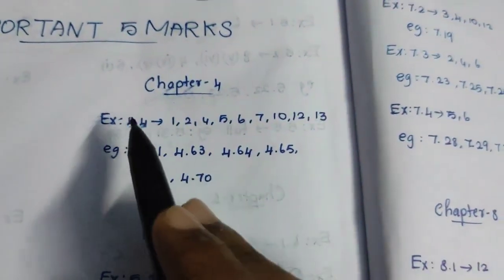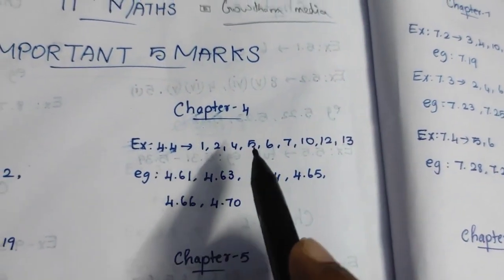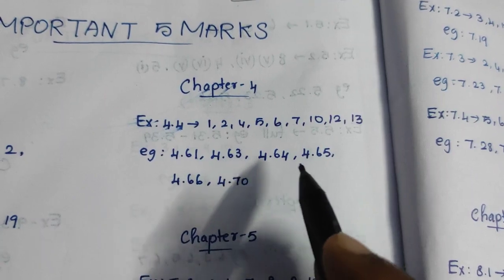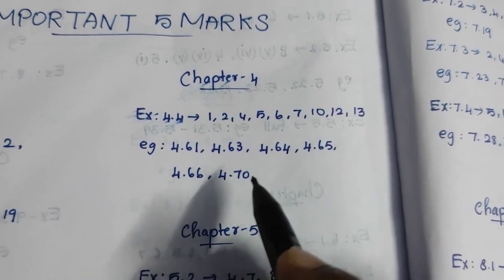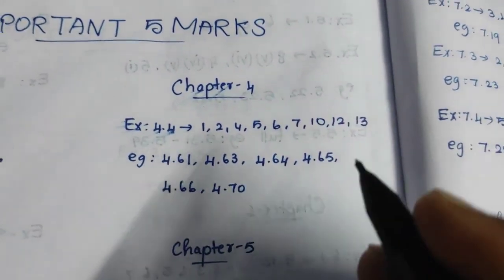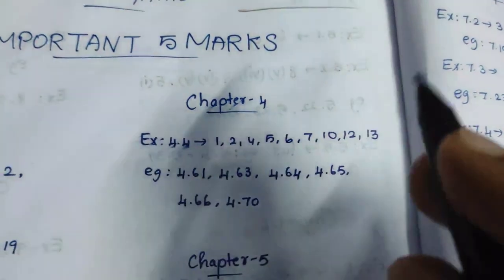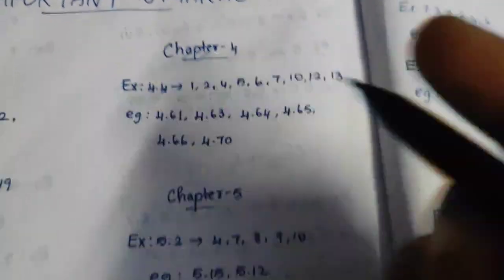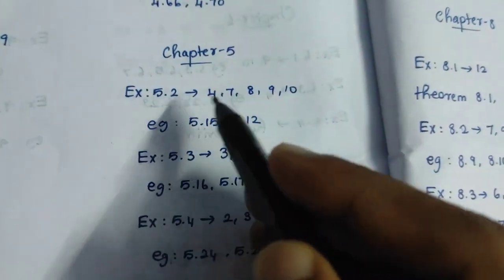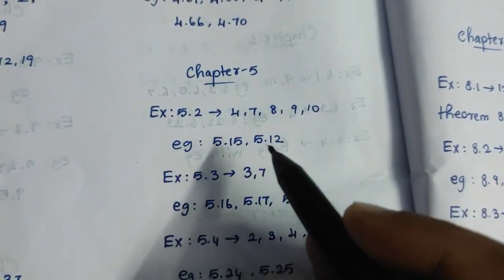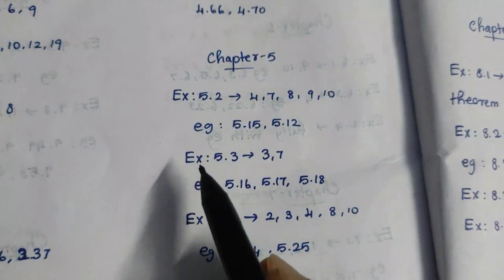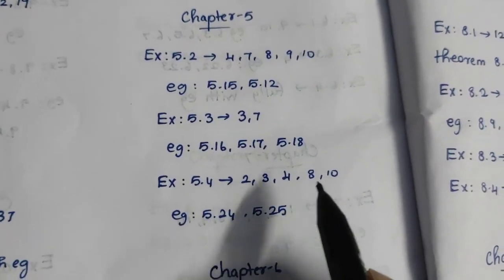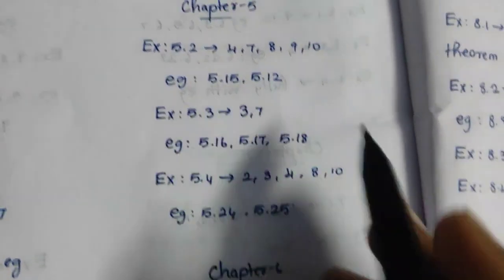Fourth chapter is Exercise 4.4, 1, 2, 4, 5, 6, 7, 10, 12, 13. 4.61, 4.63, 4.64, 4.65, 4.66, 4.70. I think you will know the matrix, probability, statistics. Chapter 5 is now and then, Exercise 5.3, 4, 14.